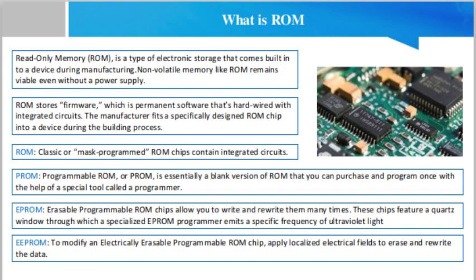Here is an overview of the different types of ROM, ranging from the most basic to the more versatile. Classic, or mask-programmed, ROM chips contain integrated circuits. A ROM chip sends a current through a specific input/output pathway determined by the location of fuses among the rows and columns on the chip.